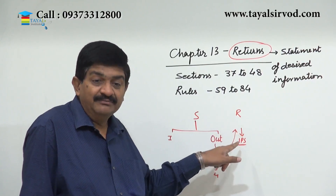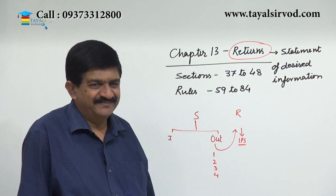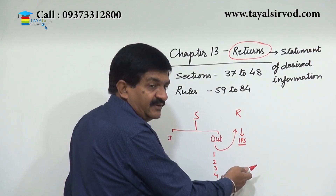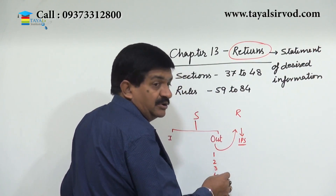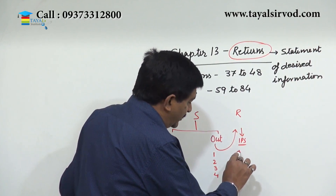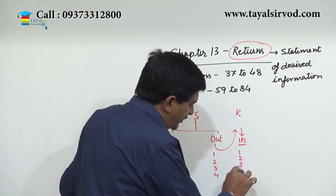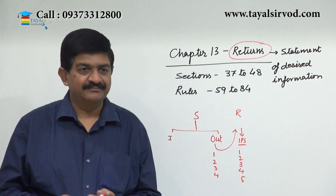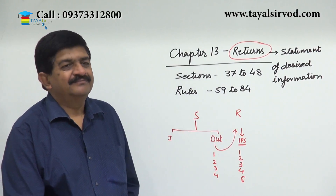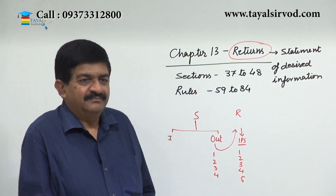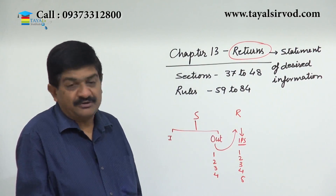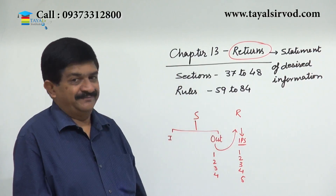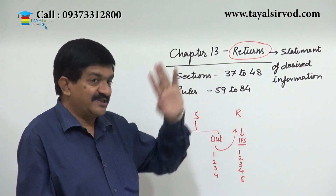For the recipient, those become input supplies. Now this recipient says that he has received not only supplies one, two, three, four — he has also received a fifth supply from the same supplier. But the supplier has not declared supply number five.